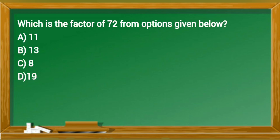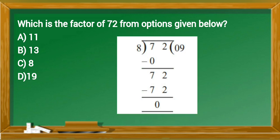Which is the factor of 72 from options given below? 72 is completely divisible by 8. So 8 is factor of 72. And option C is the correct answer.